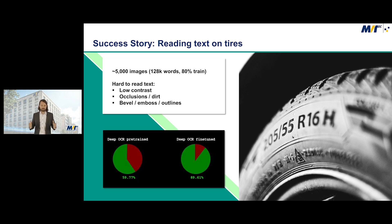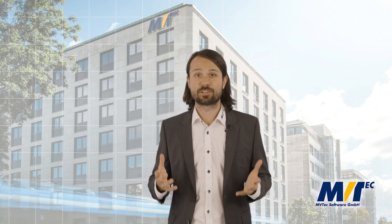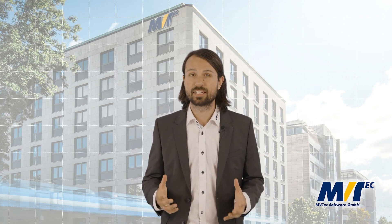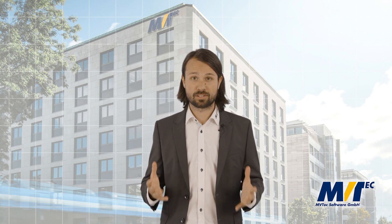With the pre-trained classifier of Deep OCR, they reached about 60%. And after training with those 5,000 images, we reached close to 90%. So I hope this very short introduction on labeling and training Deep OCR helps you get started.